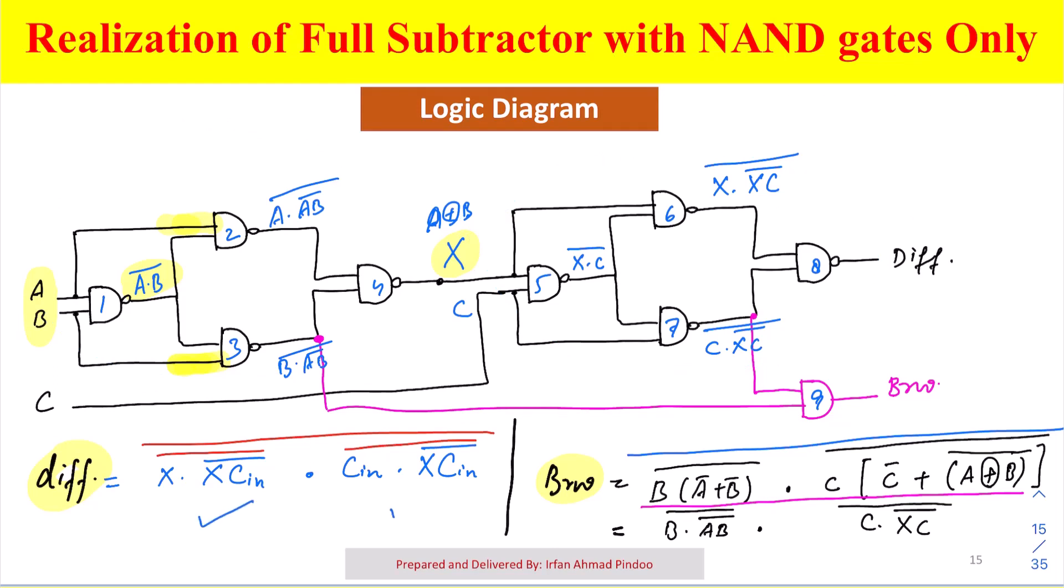You can see that we need total eight NAND gates to realize the difference. This equation has been implemented because difference that we are getting here is nothing but the dot product of output of gate six and gate seven with a bar. This is gate six output, this is gate seven output, and there is a bar also at the last.